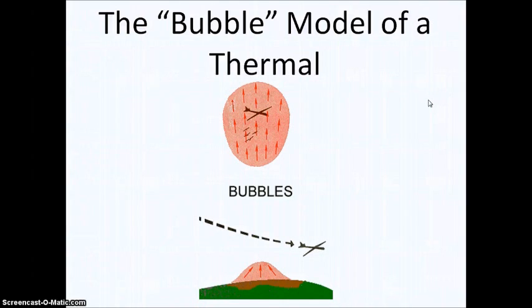But this, the bubble thermal isn't really that good for soaring, as you can see in the picture below. And it's also not quite as common as the column. Typically, bubble thermals also will not have a cloud. Almost always will not have a cloud.